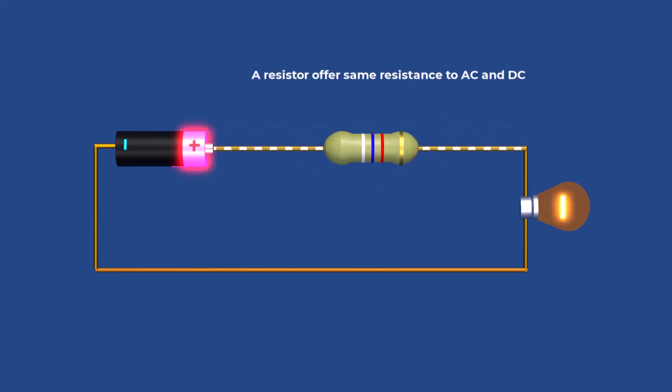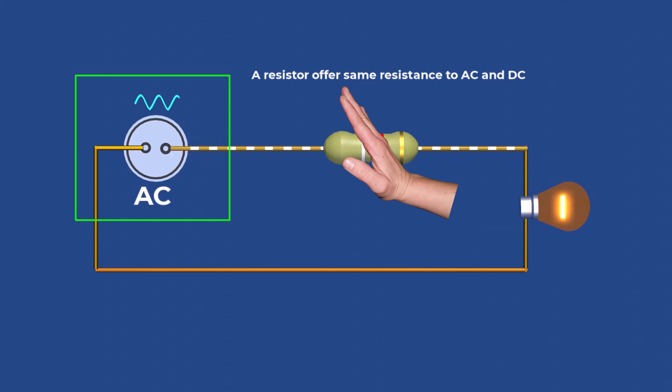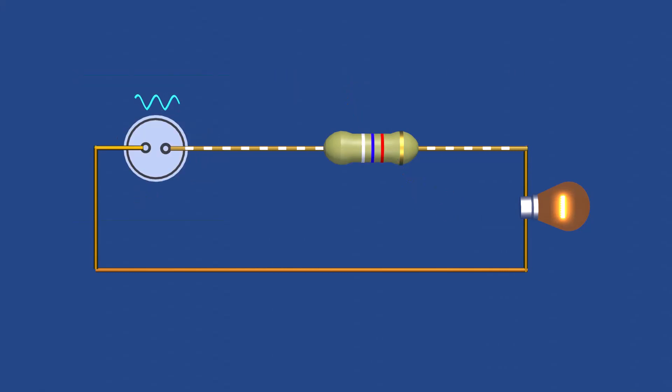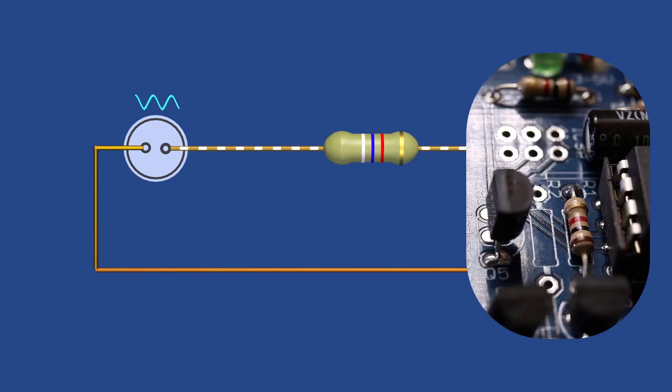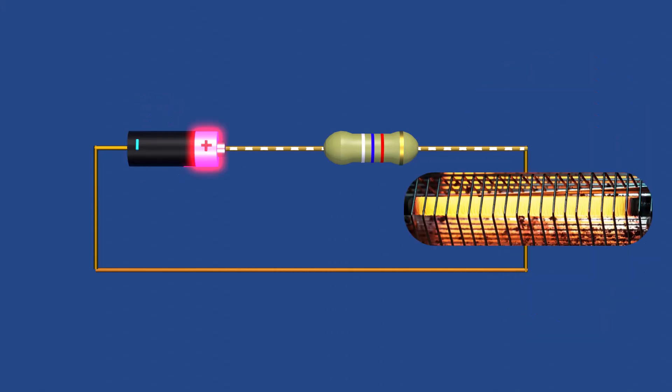A resistor maintains the same resistance value whether it is in a DC or AC circuit, and has a wide range of applications in electronics, including heat dissipation, voltage division, and current control.